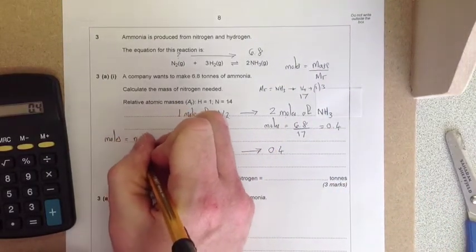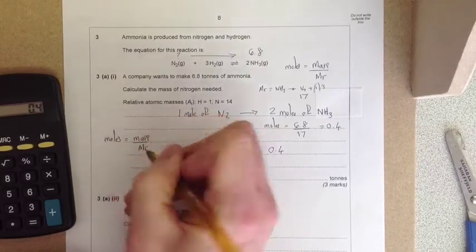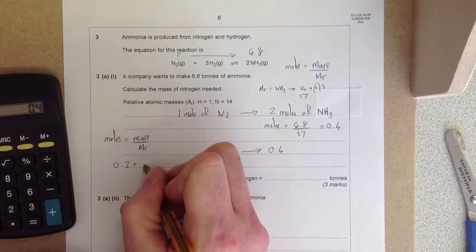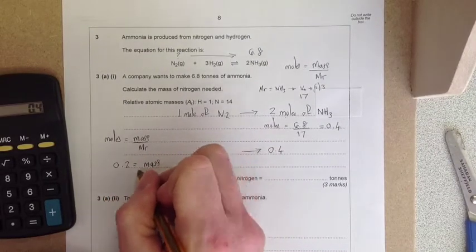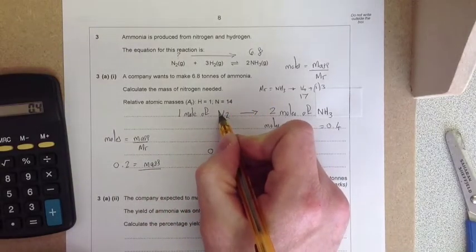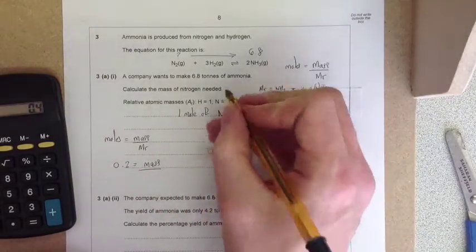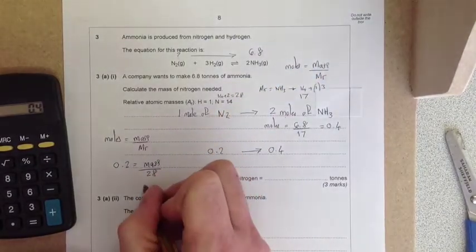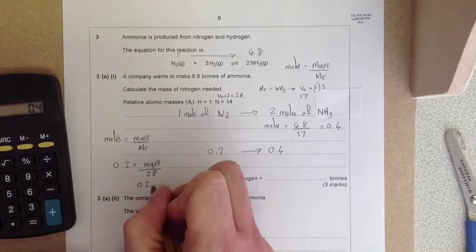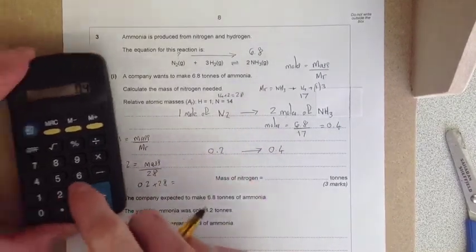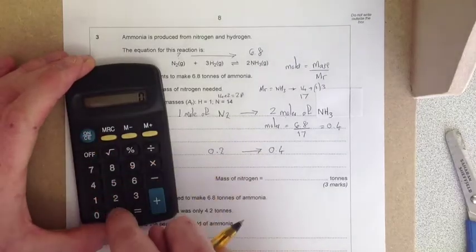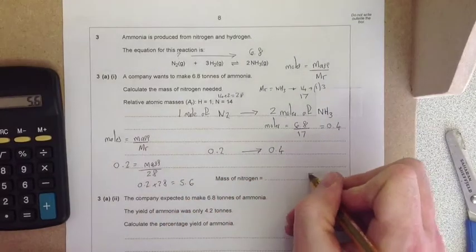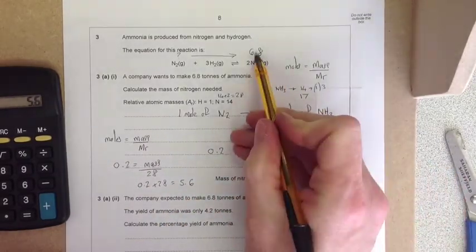Moles equals mass divided by Mr. So 0.2 equals the mass divided by the Mr. The Mr of nitrogen is N2, so 14 times 2 gives 28. So 0.2 times 28 will give 5.6, and that would be 5.6 tons.